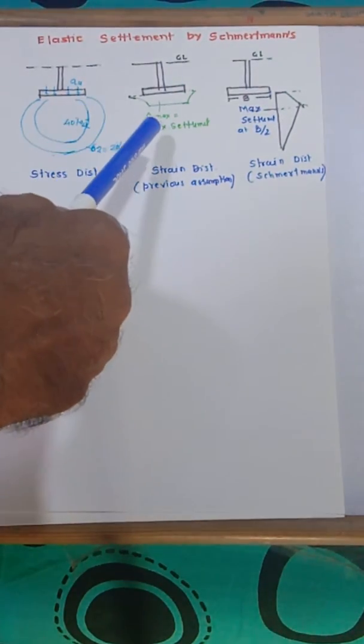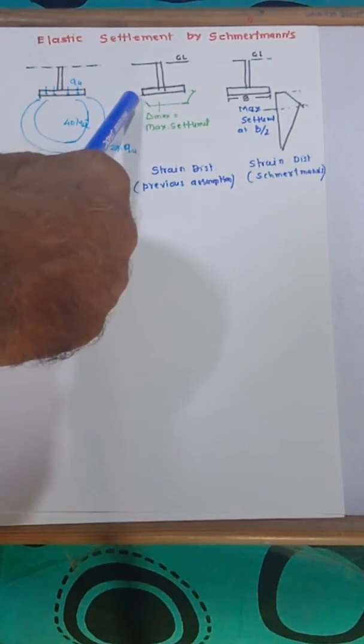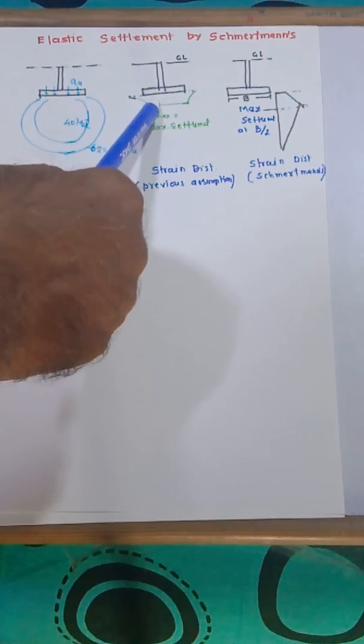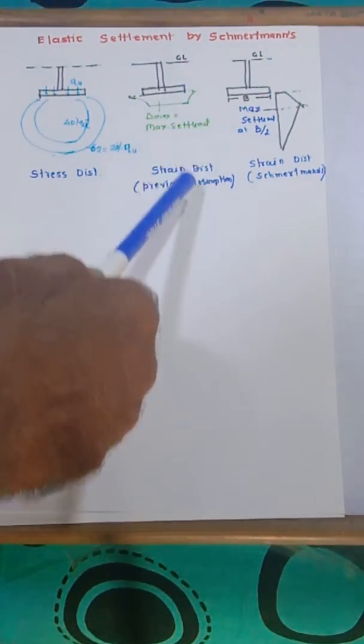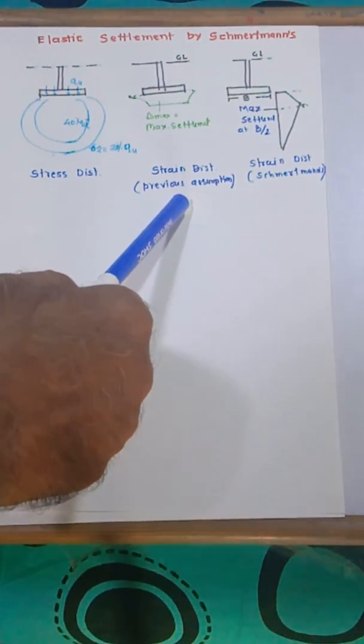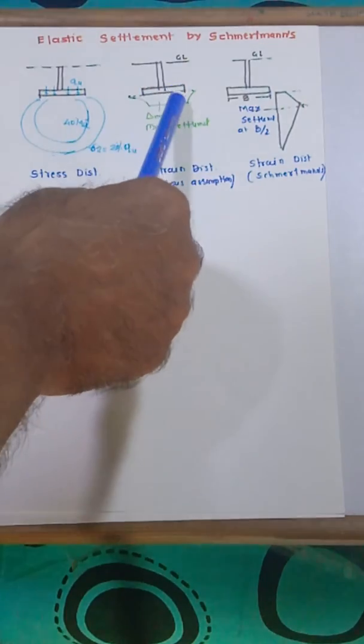So our general opinion is that where the stress is maximum, the settlement is maximum. Here I shown for a rigid foundation how the settlement is maximum. This is the strain diagram, so this is a general opinion about where the stress is maximum, where the settlement or strain is maximum.